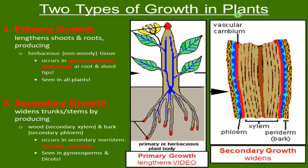What are the two types of growth in plants? There's primary growth — this lengthens the shoots and roots, producing herbaceous, non-woody tissue. This occurs in the apical meristem, which are at the root and shoot tips. This is seen in all plants. Secondary growth is when we're widening the trunk and stems by producing wood — secondary xylem — and bark, which is secondary phloem. This occurs in the secondary meristem, also known as the vascular cambium. We see this in gymnosperms and dicots.